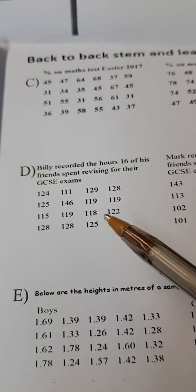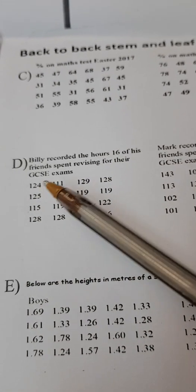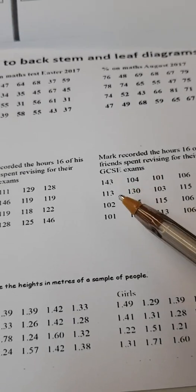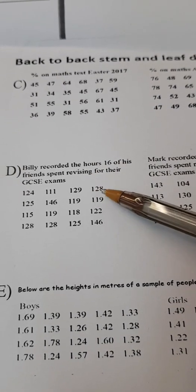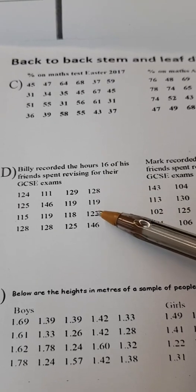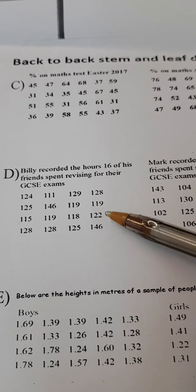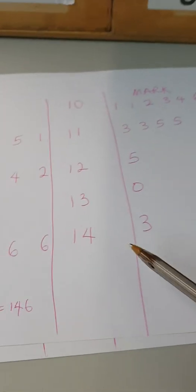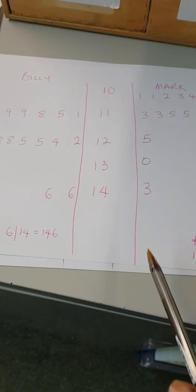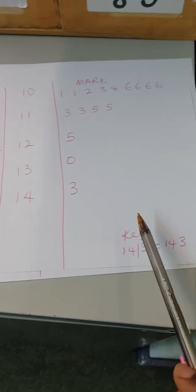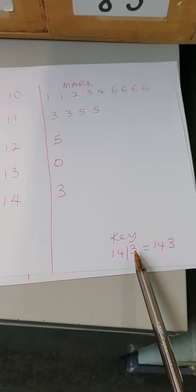Looking at the numbers, the minimum we have on Billy's side is 111 and the minimum on Mark's side is 101. To get our stem, we make the first two digits the stem and the last digit the leaves. You make an unordered form first, then rearrange to make an ordered stem and leaf diagram. I've done the ordered part here — for Billy you should have these numbers on this side and for Mark this part on that side.